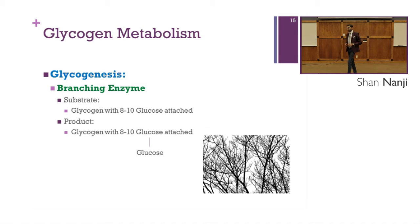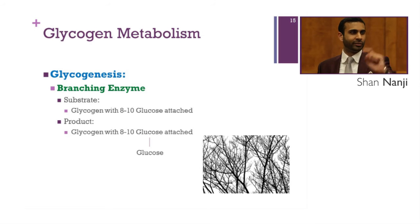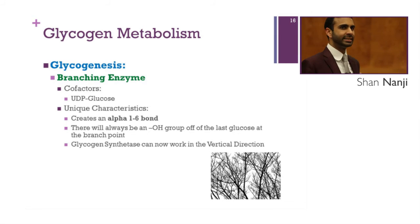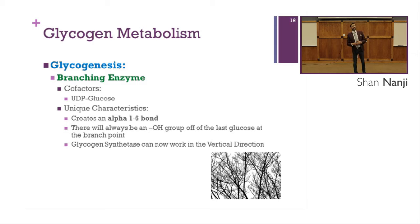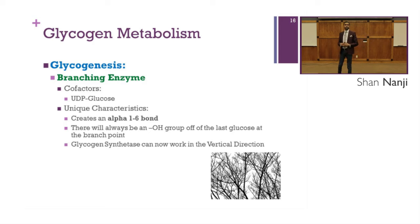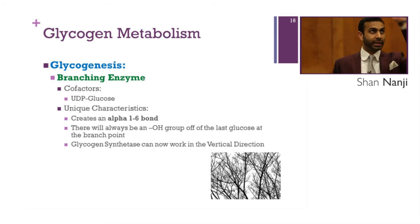The next enzyme is branching enzyme. The product is glycogen with eight to ten glucose attached and another glucose attached on a vertical branch. The cofactor required is UDP-glucose. Unlike glycogen synthetase which makes alpha-1,4 bonds, branching enzyme makes an alpha-1,6 bond. There will always be a hydroxide group off the last glucose at the branch point, and glycogen synthetase can then work in the vertical direction.